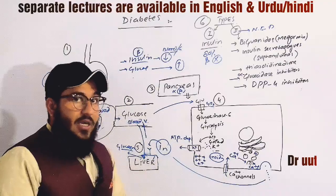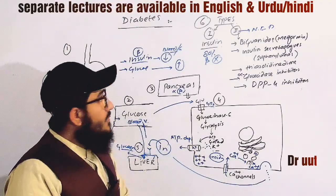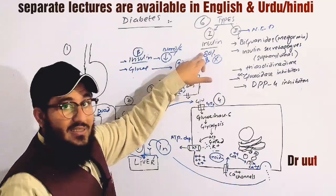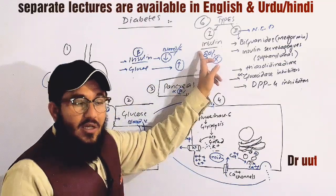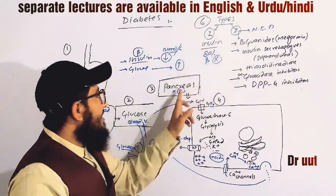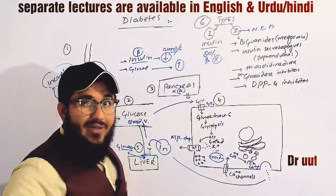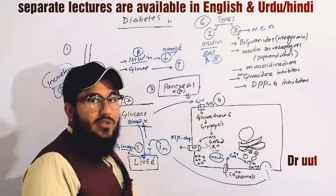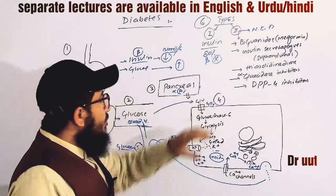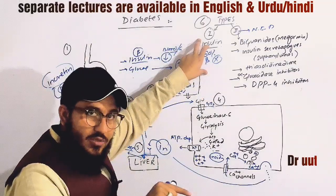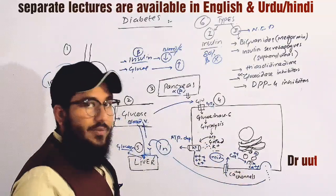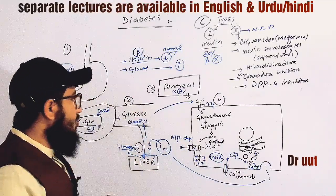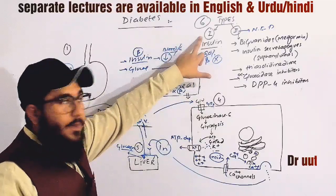In diabetes mellitus type 1, there is a decrease in beta cells — approximately 80% of the beta cells die or become damaged due to some disease or an autoimmune condition. With so few beta cells, very little insulin is available to do its job. In this case, we provide insulin injections to compensate and fulfill the insulin concentration needed to absorb glucose from the blood vessels into the tissues.